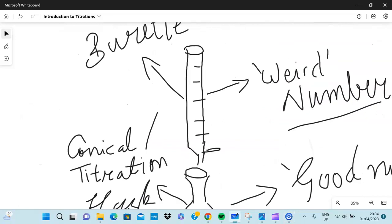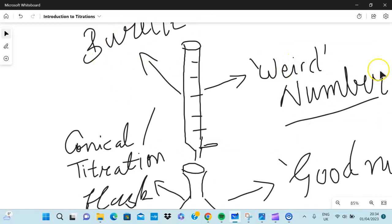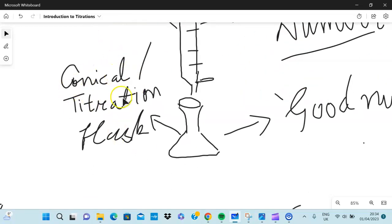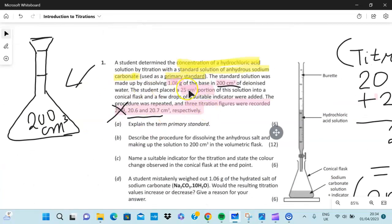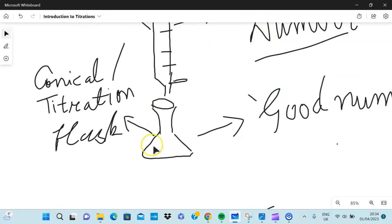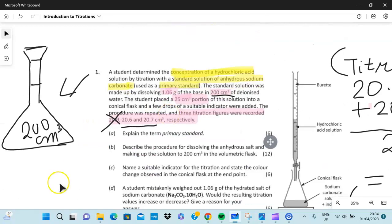The burette is the number with the weird number. I will explain what this means. Conical flask, also known as the titration flask, don't get put off when you see titration flask, it's the same thing. Conical flask has the good number. See here it says 25 cubic centimeters, it doesn't have 0.005 or anything with it. So that 25 cubic centimeters goes to the titration flask, that solution, and the rather weird number goes to the burette.